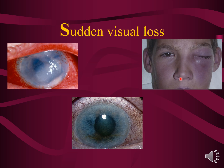Another example is cellulitis — you can see redness of the skin, and if infection spreads into the orbit it can cause visual loss. Finally, in angle closure glaucoma, the angle where the iris meets the cornea at the trabecular meshwork becomes blocked, causing pressure to spike. This results in a fixed mid-dilated pupil, the iris plastered to the cornea on slit lamp, corneal swelling with loss of iris detail, and a red, painful eye.